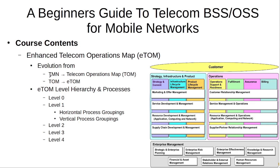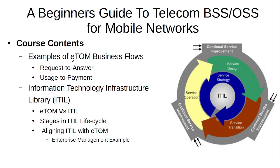Then we will discuss how the TMN model evolved into the Telecom Operations Map model, and then how that evolved into the Enhanced Telecom Operations Map model, also called eTOM. Nowadays, eTOM is used by almost all mobile network operators to manage their network and business processes. This eTOM model has a hierarchy of different levels, each containing different processes, and we will discuss this hierarchy, these processes, and how eTOM blocks can be used to construct detailed business flows — considering the examples of Request to Answer and Usage to Payment.